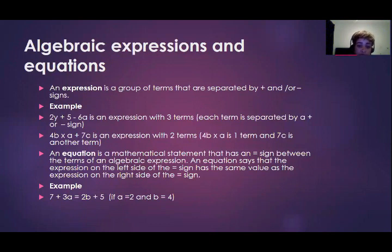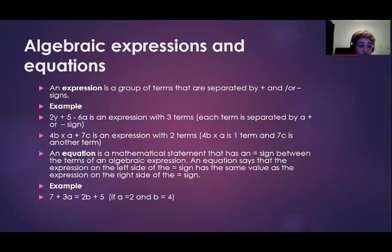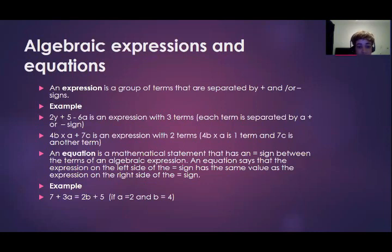An equation is a mathematical statement that has an equal sign between the terms of an algebraic expression. An equation says that the expression on the left side of the equal sign has the same value as the expression on the right side. For example, 7 plus 3a equals 2b plus 5. These two expressions are equal if a equals 2 and b equals 4. When you substitute those numbers in and calculate, both sides will be equal to 13, making the equation true.